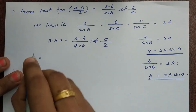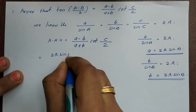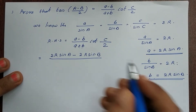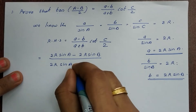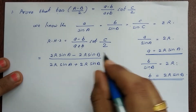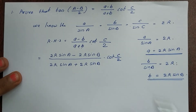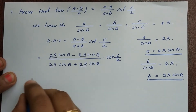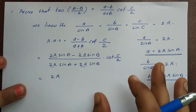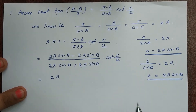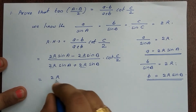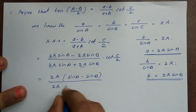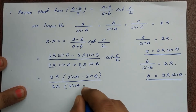Now substitute: a equals 2r sin A, b equals 2r sin B. So we get (2r sin A minus 2r sin B) divided by (2r sin A plus 2r sin B) into cot C by 2. The 2r cancels out.